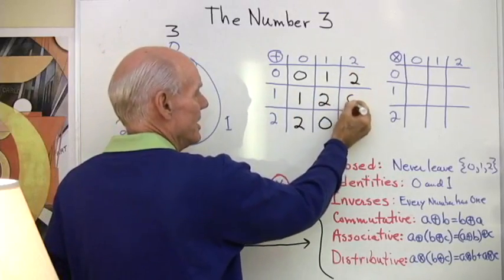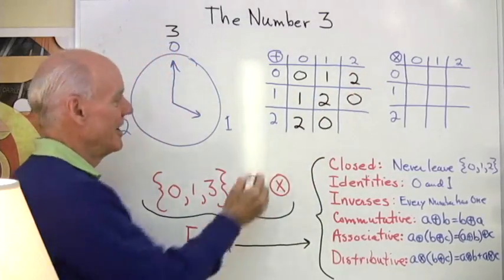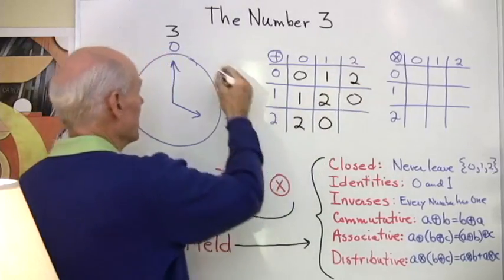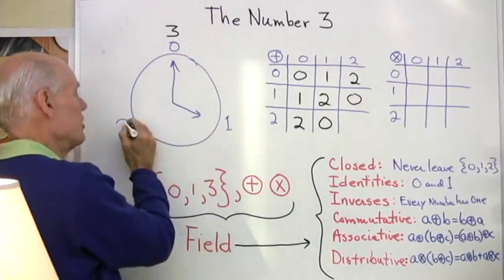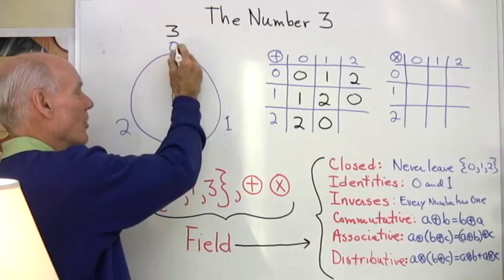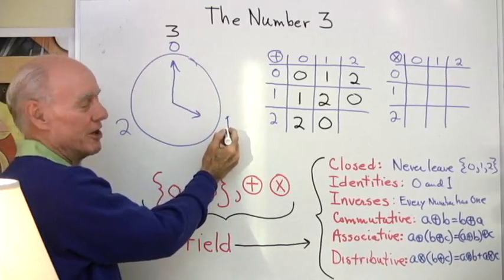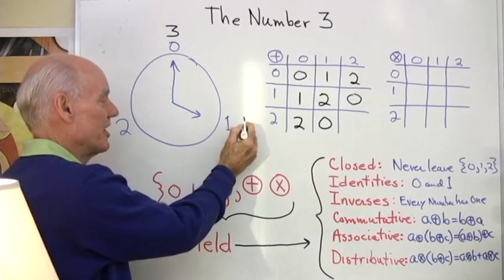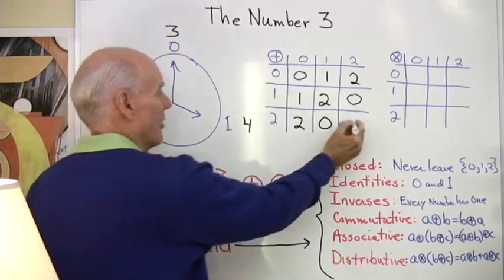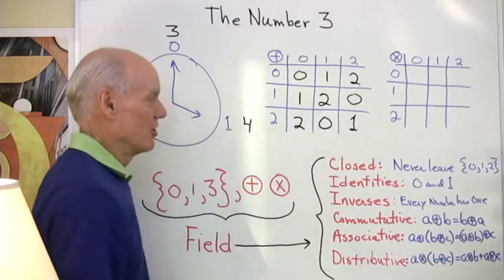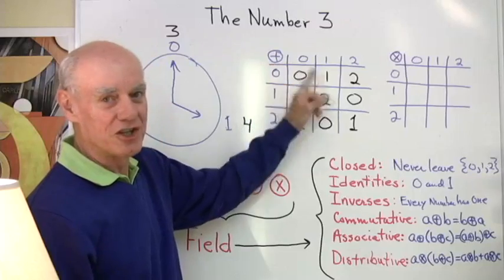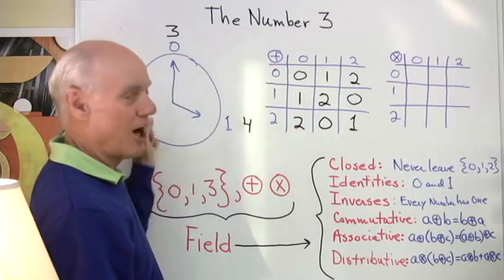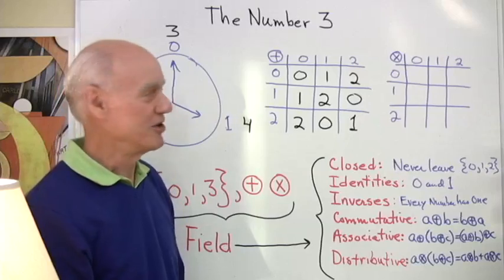1 plus 2 is 3, so I'll put down a 0. And 2 plus 2, let's see, I'll go 1, 2, and then 2 more, 1, 2, I end up over here at 1. Normally I would think of that as 4, but I write down 1. So there is my circle addition table for this clock arithmetic for 0, 1, and 2.